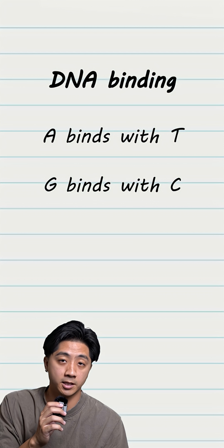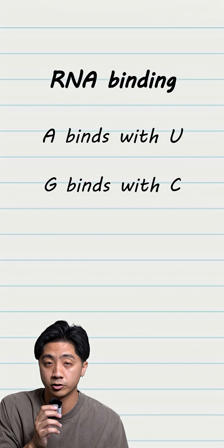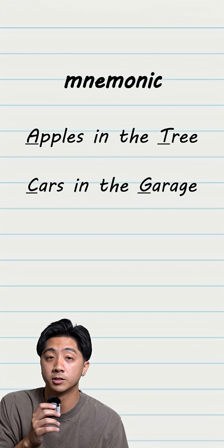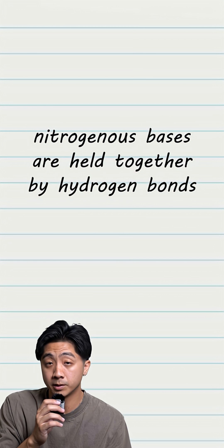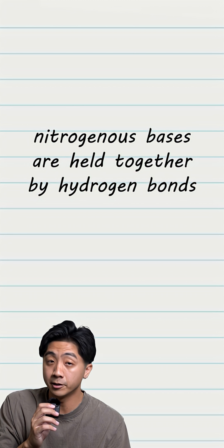In DNA, A binds with T and G binds with C. In RNA, there's no T, so A binds with U. Apples in the tree, cars in the garage. The bonds between the nitrogenous bases are hydrogen bonds.